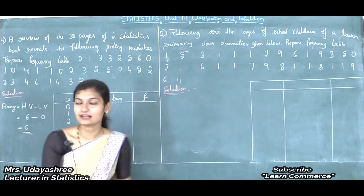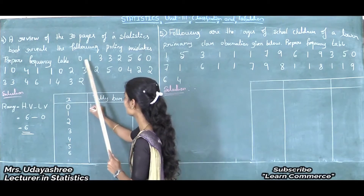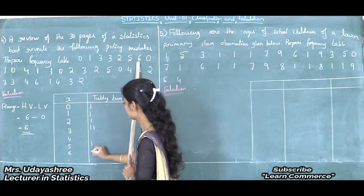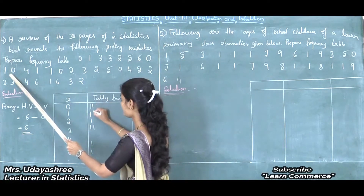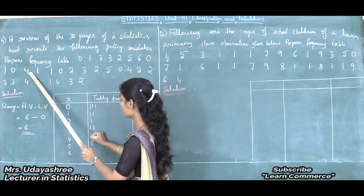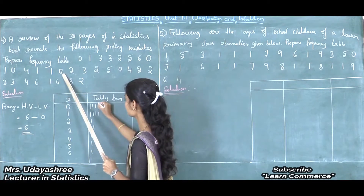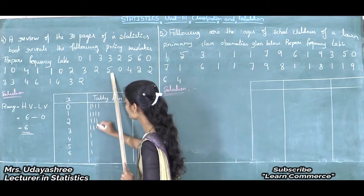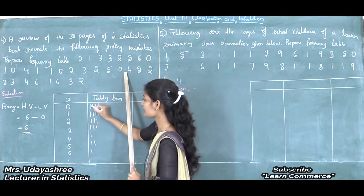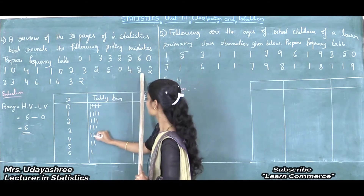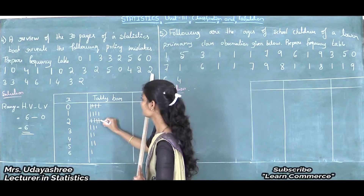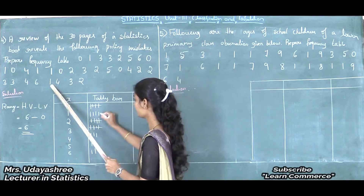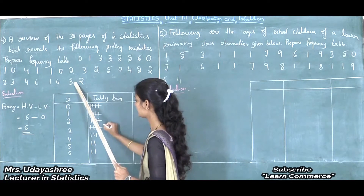Next, how to put tally marks: the first observation is 0, so in front of 0 I will put 1 mark. Then 1, 3, 3, 2, 5, 6, 0, 1, 0, 4, 1, 1, 1, 0, 2, 3, 2, 2, 5 — at which point 4 marks are complete, shown with a cross bar — then 4, 2, 2, 3, 3, 4, 6, 1, 4, 3, and 2.